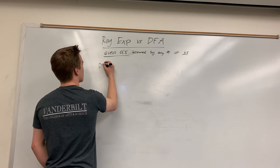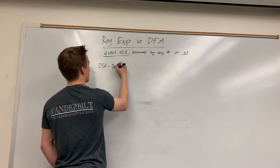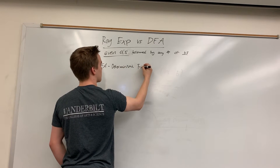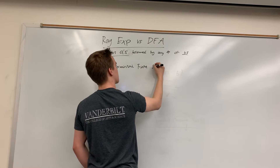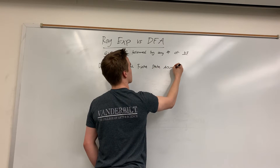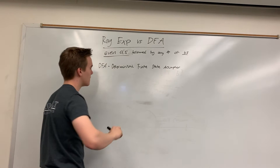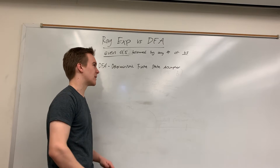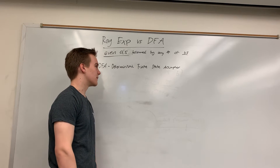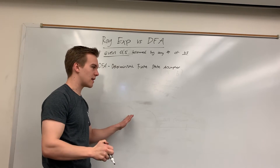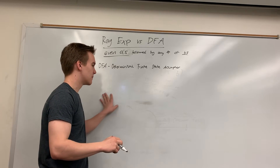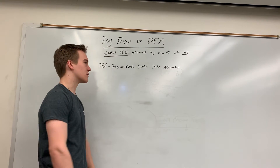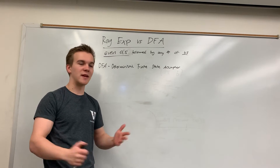Remember that a DFA is a deterministic finite state acceptor. The principle here is relevant to compiling a C program — compiling code. Basically, the idea is that we can look at some sequence of strings like your code in C or your code in Racket and determine if it's good code based on principles.